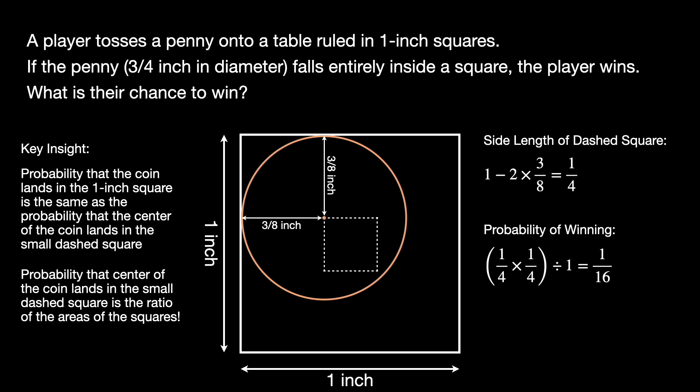As you can tell, this is not a very large chance of winning the game. Even though we weren't asked to compute it, a quick back of the napkin calculation shows us that the expected value of playing this game is negative. Every time we win, we only receive 5 cents. However, every time we lose, we are losing 1 cent. And we are only winning 1 out of 16 times, assuming that we can have no skill in this game.